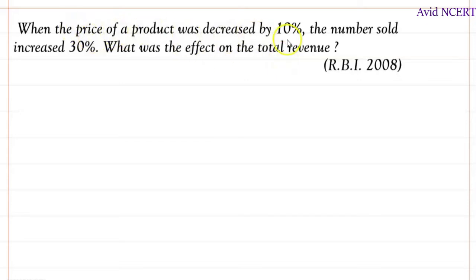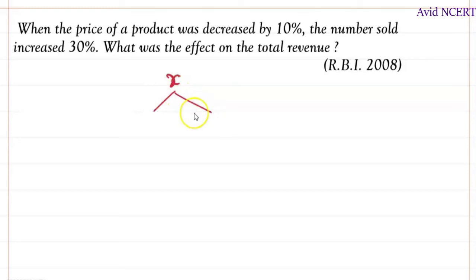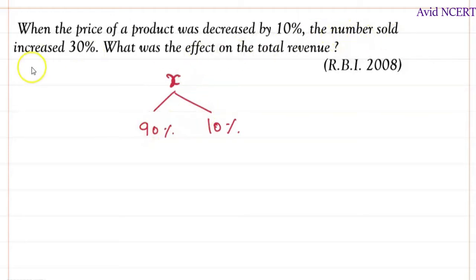From the first sentence, the price of the product is decreased by 10 percent. So let the price of the product be X. It is decreased by 10 percent, which means the price of the product now is 90 percent. The number sold increased by 30 percent, which is 100 plus 30 equals 130 percent.